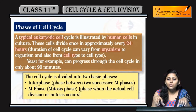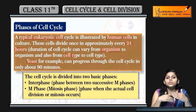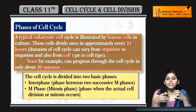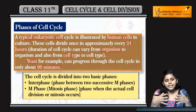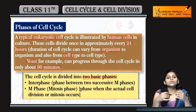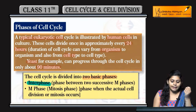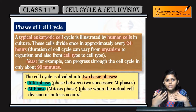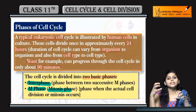For example, in yeast the cell cycle continues for about 90 minutes, whereas for human beings it is 24 hours. The cell cycle is basically divided into two phases: interphase and M phase, also called mitotic phase or mitosis phase.